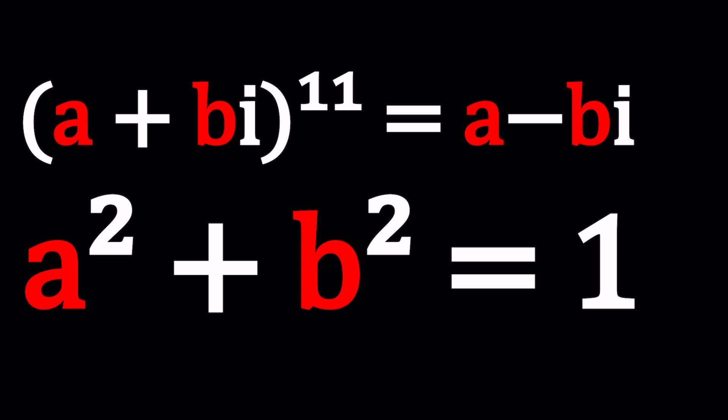Specifically, we have a plus bi to the 11th power equals a minus bi, which is the complex conjugate of a plus bi, and we're also given that a squared plus b squared is equal to 1, which is nice.